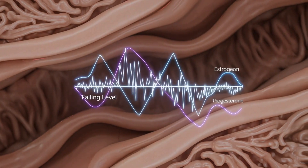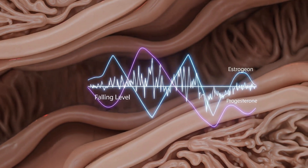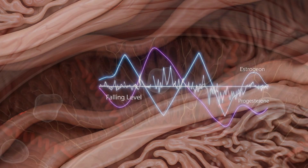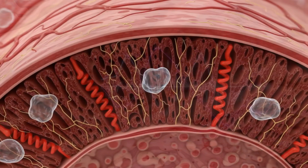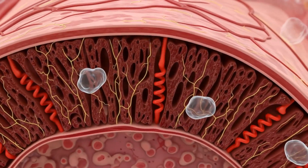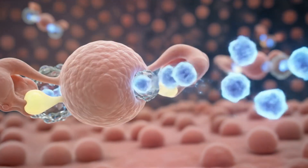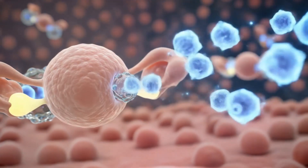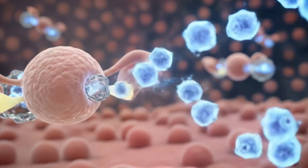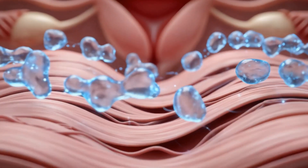At the end of the menstrual cycle, we see a dramatic shift in hormone levels. Estrogen and progesterone, which have been maintaining the endometrium, suddenly drop. This hormonal withdrawal triggers a cascade of events. The endometrial cells, responding to this change, begin releasing prostaglandins, chemical messengers that initiate uterine muscle contractions.